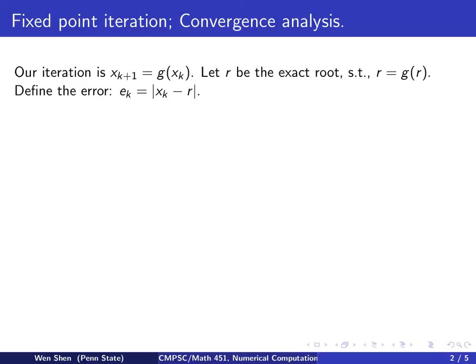We'll define the error at iteration number k as the distance between x_k and the root r in absolute value. Then we want to understand how the error evolves as we take one more iteration.